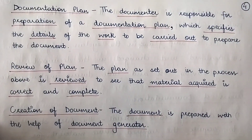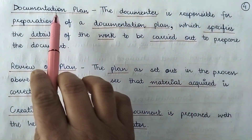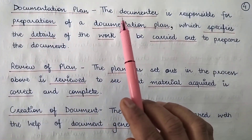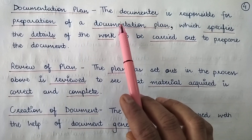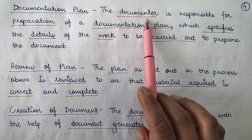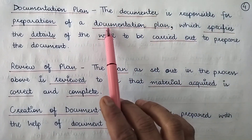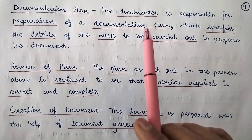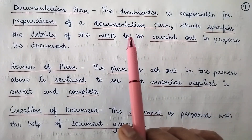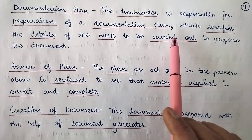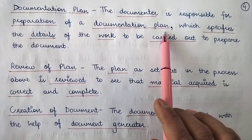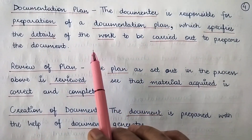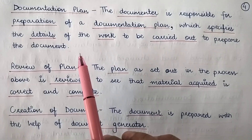The second stage in the documentation process is the documentation plan. Once the source material has been acquired, the documenter is responsible for preparing a documentation plan. This documentation plan specifies the details of the work which will be carried out to prepare the document.